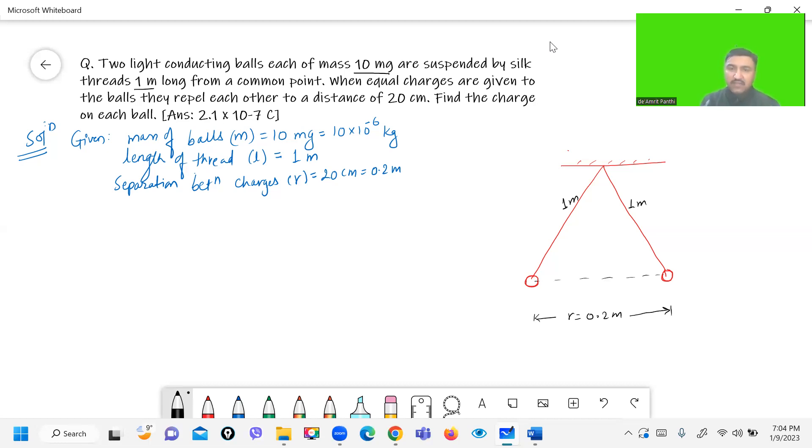The arrangement is shown in figure. Let them be suspended from common point O. Let the first ball be A and second be B. Here we have to find out the charge. So let Q be the charge on each ball.